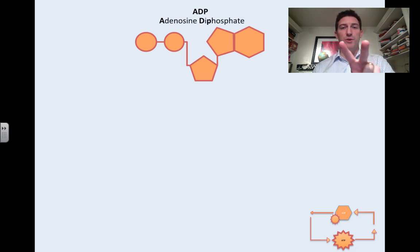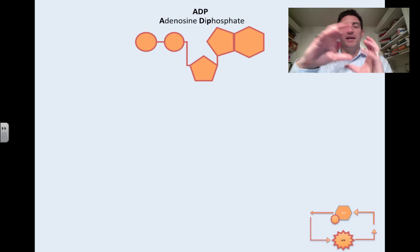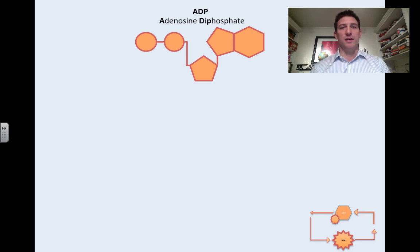The di is important because you can see we've got two phosphate groups hooked on the end there. That other part is the adenosine part which in organic chemistry tells us the structure of that. We're not going to worry about it for now. The important thing to note is we've got those two phosphate groups hooked on the end.